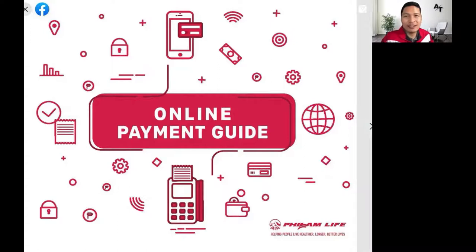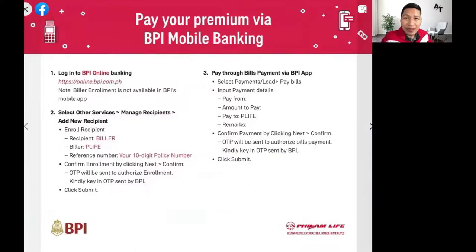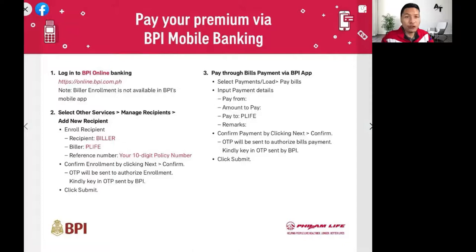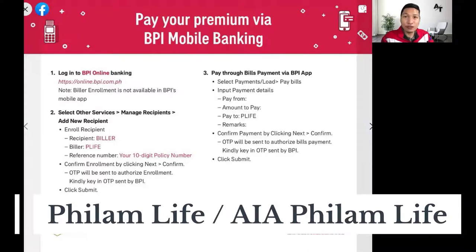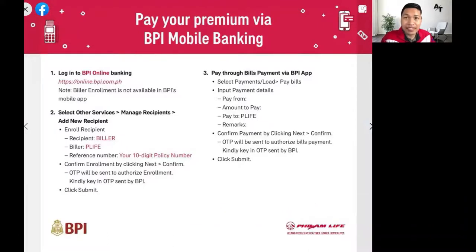Let's take a look at how you can pay for your Philam Life plans online. Let's start with your BPI mobile banking app. Go to the BPI online website first — enrollment is not available in the BPI mobile app. You can enroll your Philam Life plan online by going to Other Services, then Manage Recipients, and Add New Recipient. The biller is PLIFE — search for Philam Life or AIA Philam Life. The reference number will be your 10-digit Philam Life policy number. Confirm the enrollment.